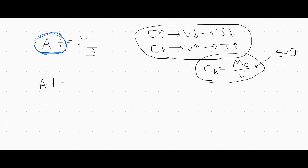The flux J can be described by film theory, which says J equals K, the mass transfer coefficient, times the natural log of C_gel over the retentate concentration C_R. C_gel is the concentration at which the flux through the filter is zero — your protein or solute of interest becomes so concentrated that it's essentially a gel, and there's no more liquid passing through your filter.